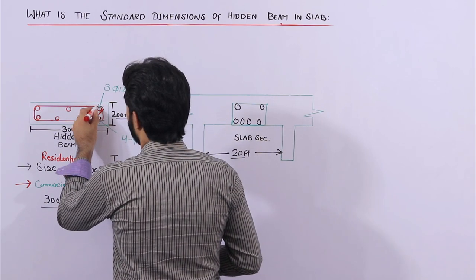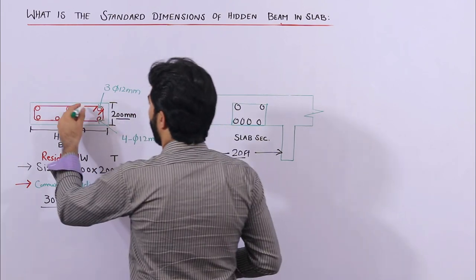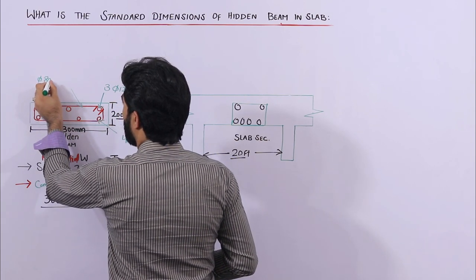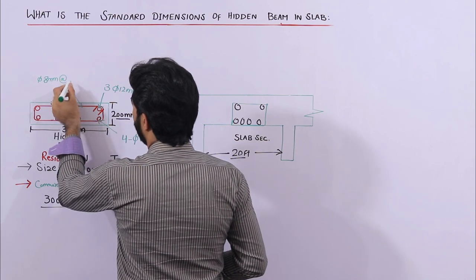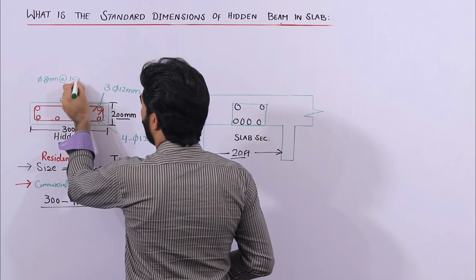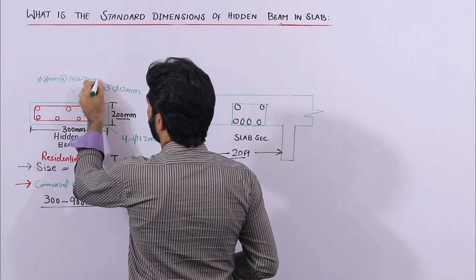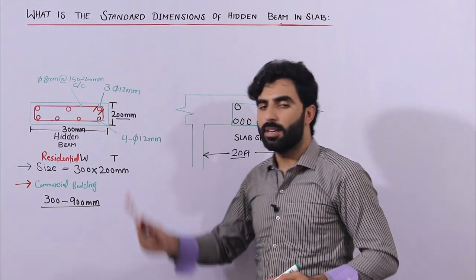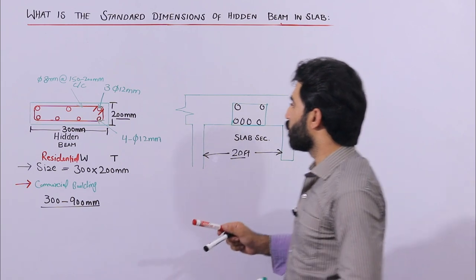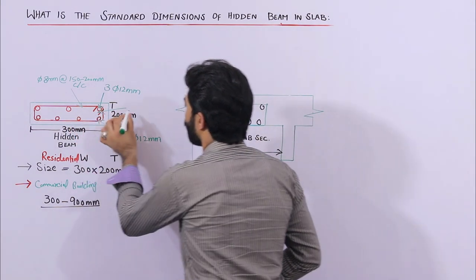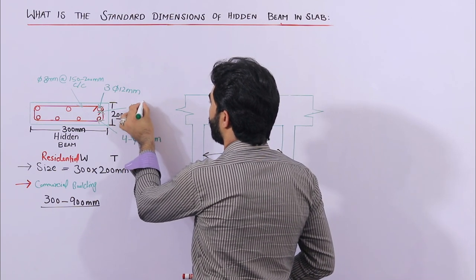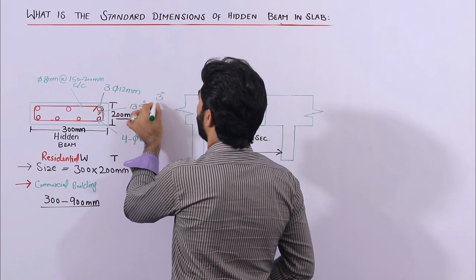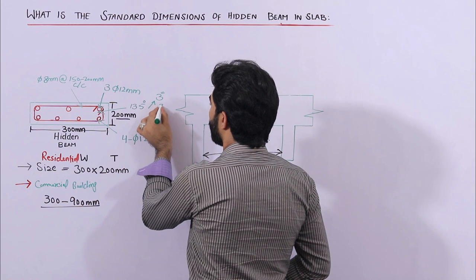For stirrups, use a stirrup diameter of 8 mm with a spacing of 150 to 200 mm center to center inside the hidden beam. The hooks of the stirrups should be bent at 135 degrees, and the hook length should not be less than three inches, or 75 mm.